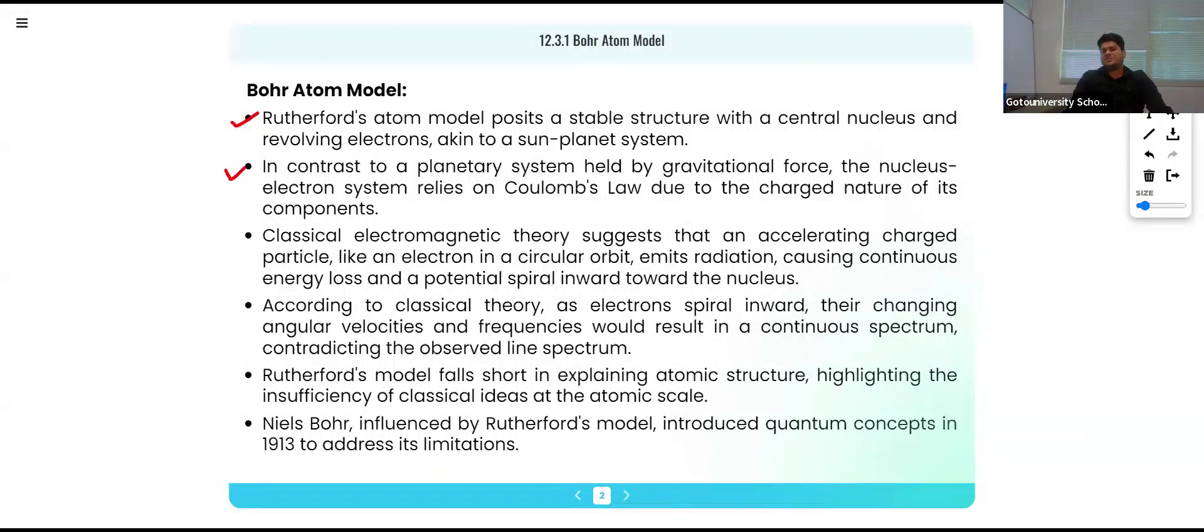Classical electromagnetic theory suggested that an accelerating charged particle like an electron in a circular orbit emits radiation, causing continuous energy loss and a potential spiral inward toward the nucleus. According to classical theory, as the electron spirals inward, the changing angular velocity and frequencies would result in a continuous spectrum, contradicting the observed line spectrum.